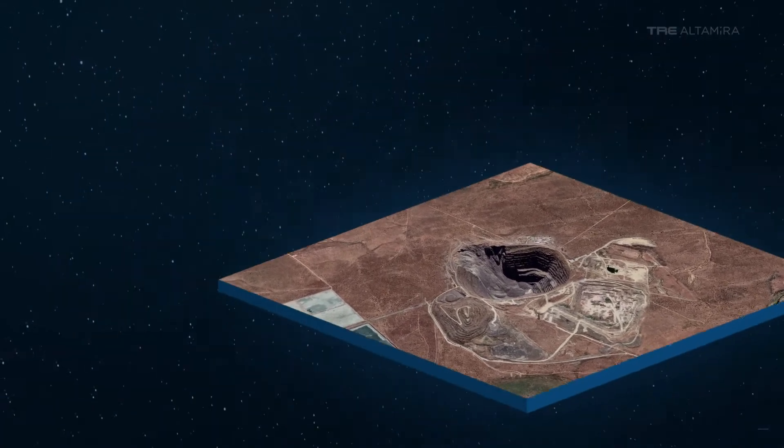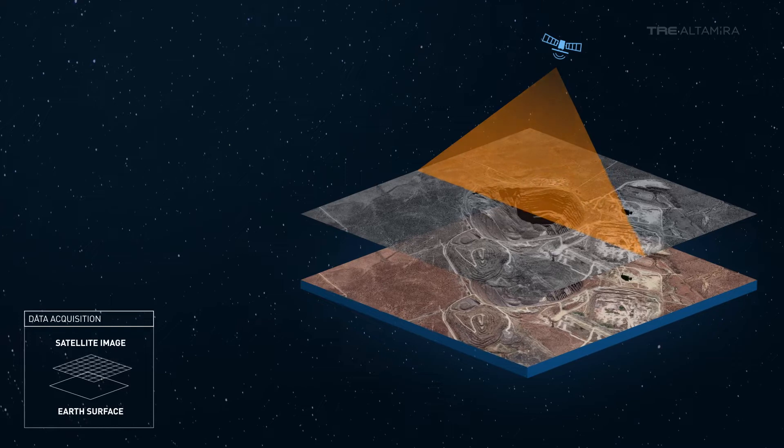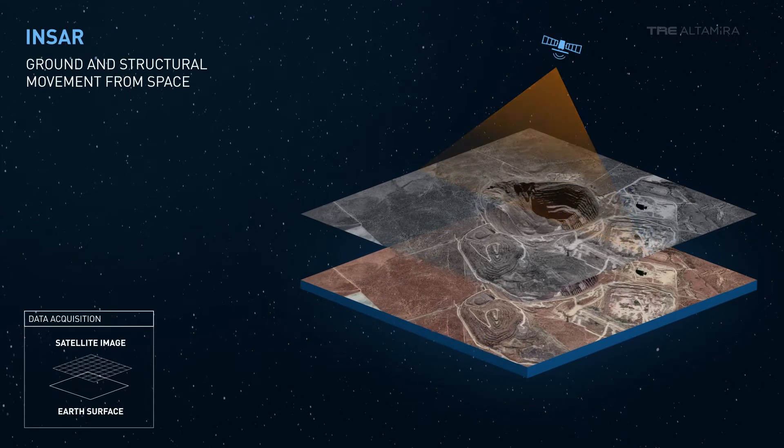Interferometric Synthetic Aperture Radar, or INSAR, is a satellite-based technology used to measure ground and structural movement from space.